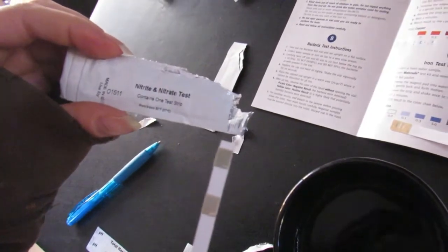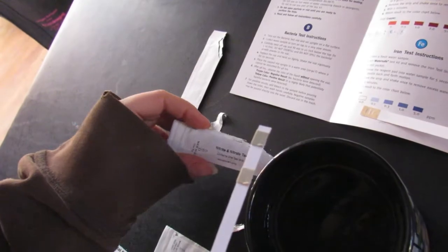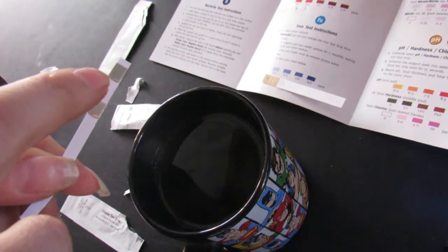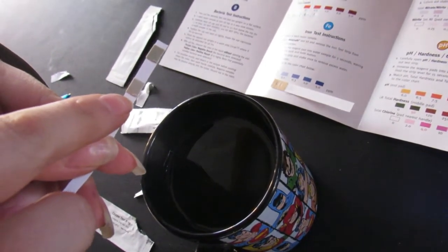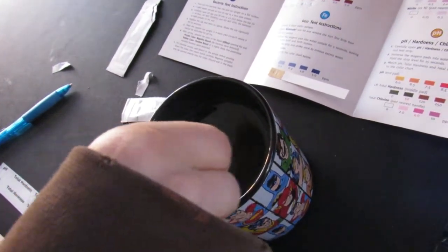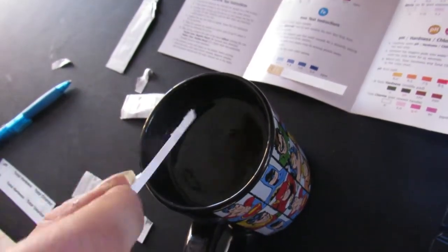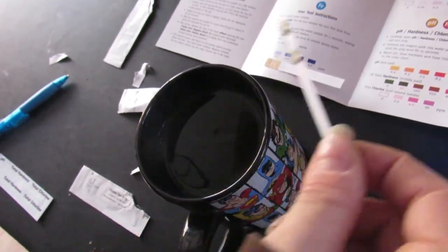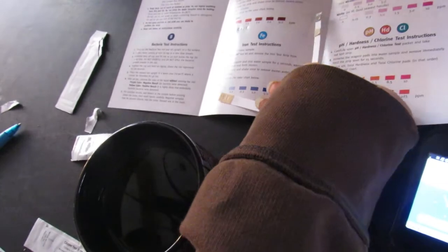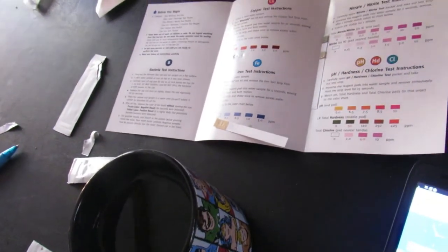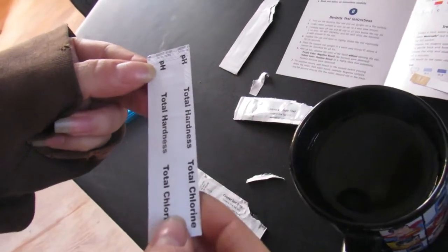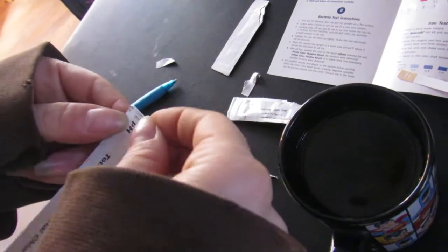Then move on to the nitrate nitrite test. I got the test strip out here. This one is a two second wave. This one has nitrate on the top and nitrite closer to the handle. So I'll start my timer. Two seconds. That's it. That was quick. Take it out. And one minute. And wait one minute.